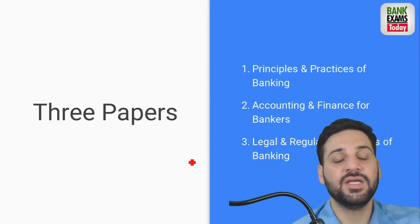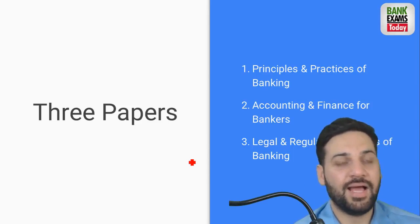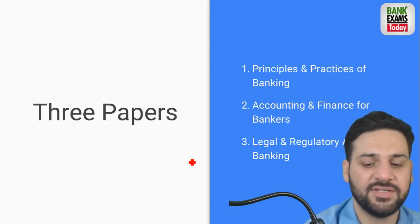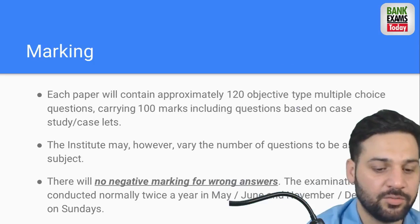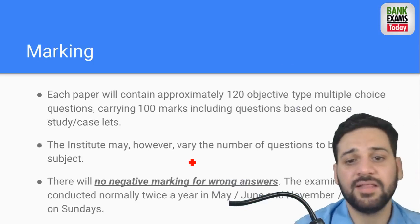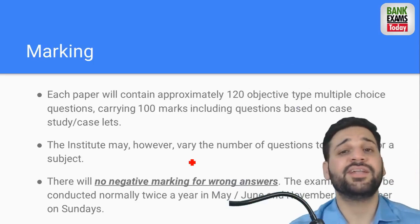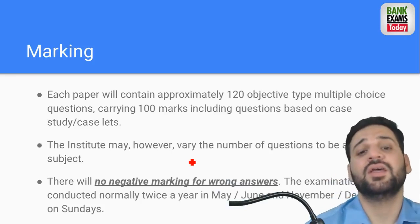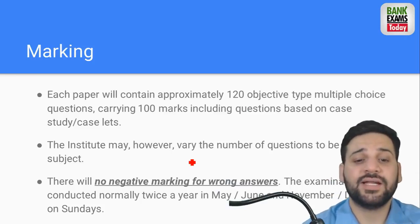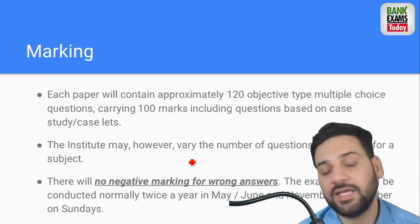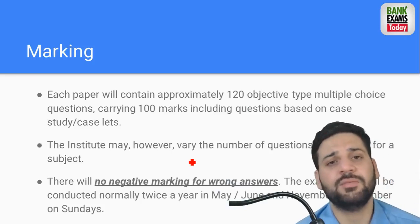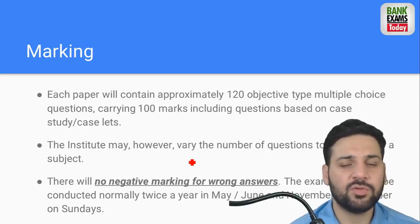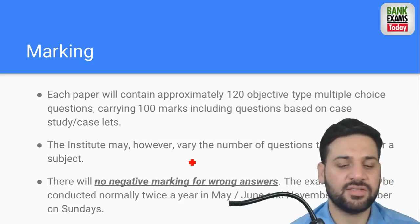The syllabus covers banking related acts. There is no negative marking. There are 120 questions and no negative marking. The exams are held in May-June and November-December.